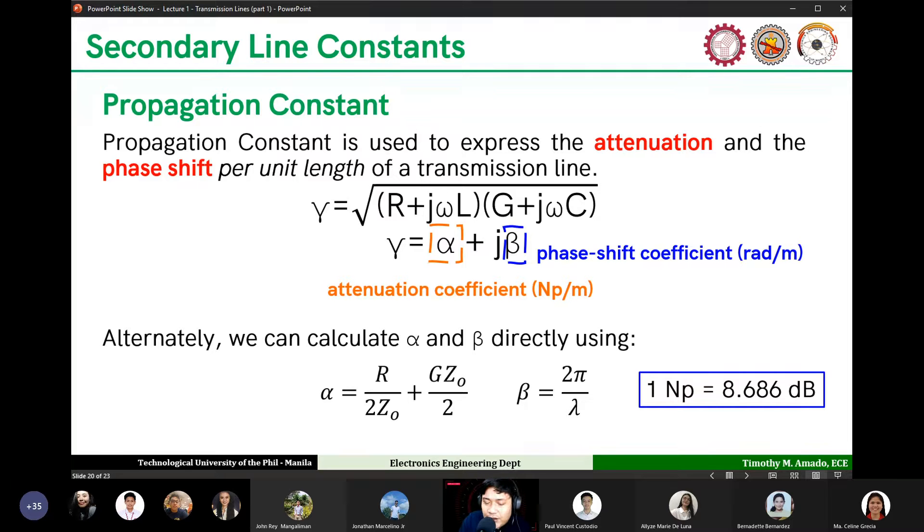Let's talk about attenuation and phase shift. Phase shift is very easy to understand - it's the shift of phase. When there's no phase shift, zero degrees. When it goes negative, 180 degrees. When it goes to zero crossing, 90 degrees. So phase shift - you know that - is the change of phase. It's very easy to understand. The signal has phase shift as it travels in the transmission line, given by the phase shift coefficient.